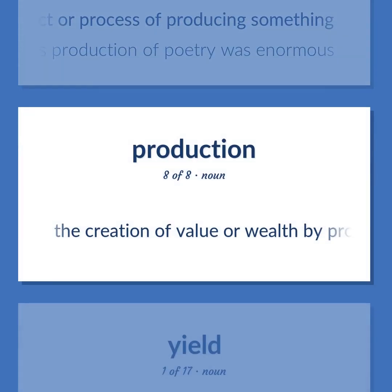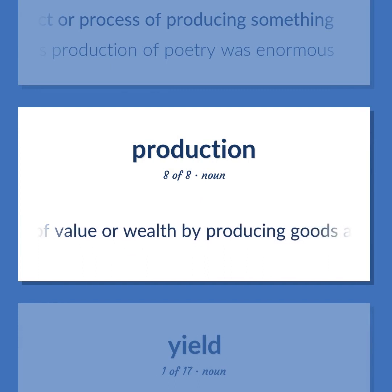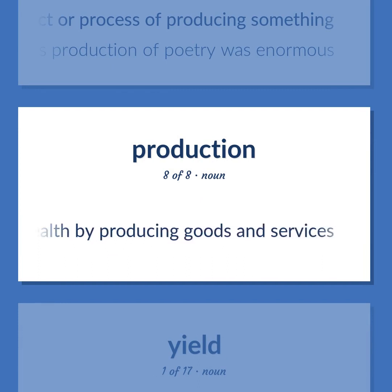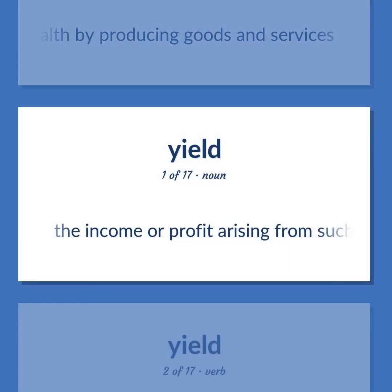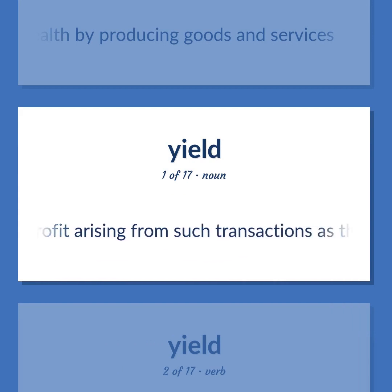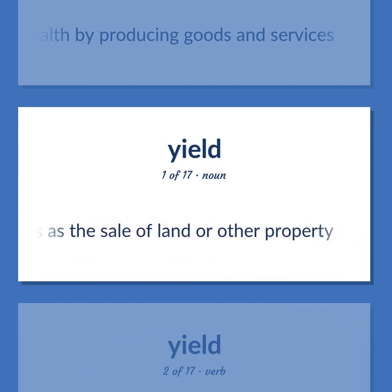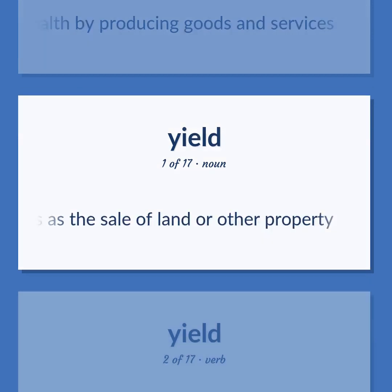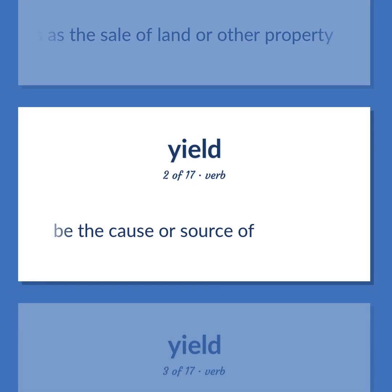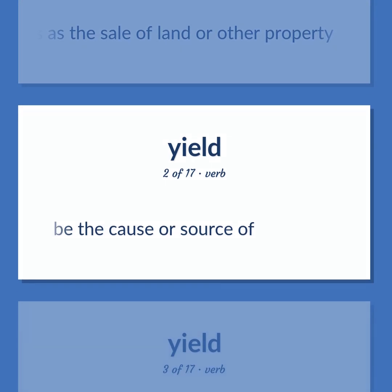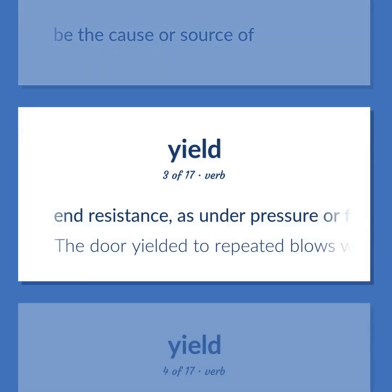Production: the creation of value or wealth by producing goods and services. Yield: the income or profit arising from such transactions as the sale of land or other property. Also, to be the cause or source of. Also, to end resistance, as under pressure or force.